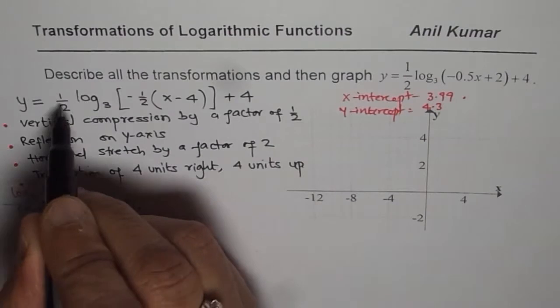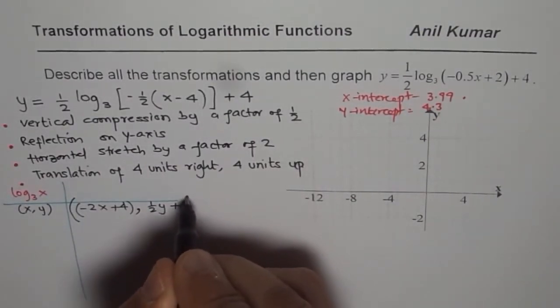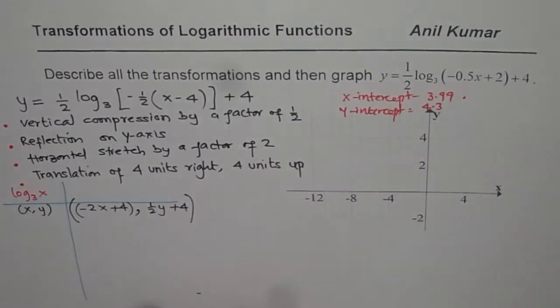And about the y values, we are multiplying them by half and then we add 4 to get the y values. So that is how we get x and y values.